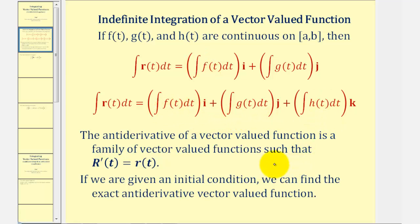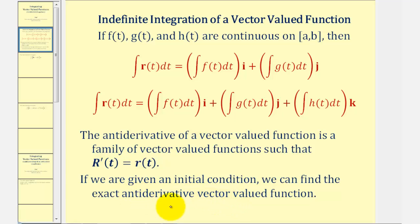It's important to remember that the antiderivative of a vector-valued function is a family of vector-valued functions, such that if R(t) is the antiderivative, then the derivative of R(t) is equal to r(t). In some cases, we are given an initial condition, and in that case we can find the exact antiderivative vector-valued function. We'll take a look at this case in the next video.